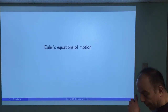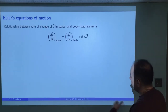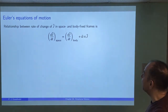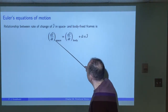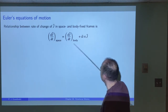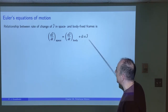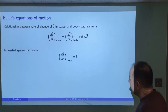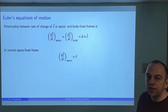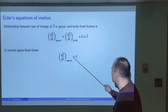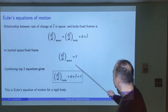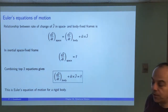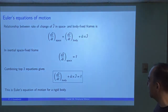Now we come to Euler's equations of motion. Instead of Q, we describe the total angular momentum vector J. In the body-fixed frame rotating with angular frequency omega, dJ/dt in the space-fixed frame equals dJ/dt in the body-fixed frame plus the added term. In the space-fixed frame, the total angular momentum won't change unless there's an applied torque, and that relationship is dJ/dt equals the applied torque. Replacing that derivative with the torque gives Euler's equation of motion for the rigid body — a pretty simple derivation once you have the rotating frame transformation.